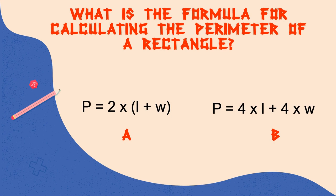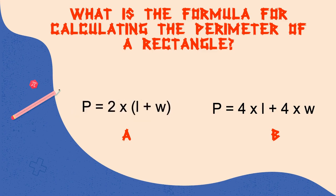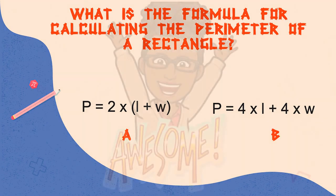What, then, is the formula for calculating the perimeter of a rectangle? Look carefully. If you said A, you are correct. Awesome job, guys.